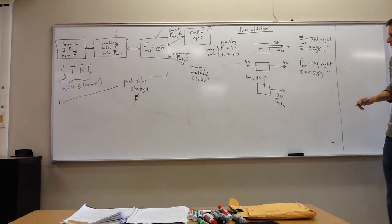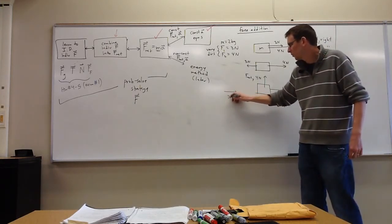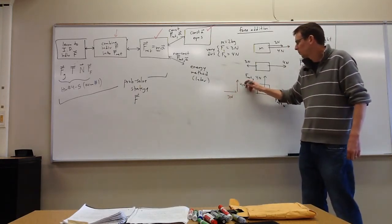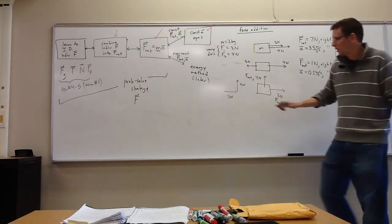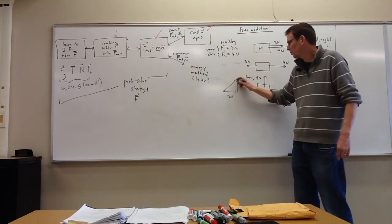And then what I do, of course, is I put them head to tail, 3 newtons and 4 newtons. If I have a rightward force and an upward force, my diagonal is rightward and upward.